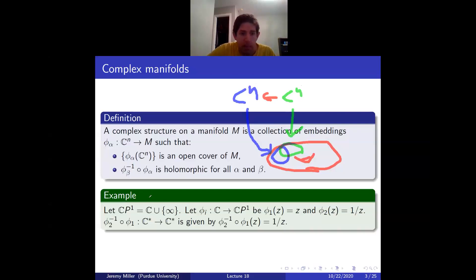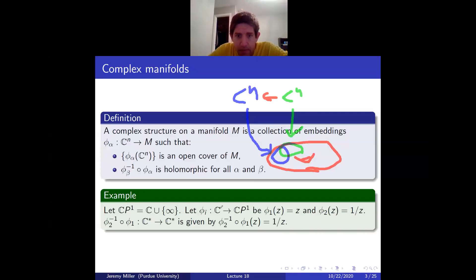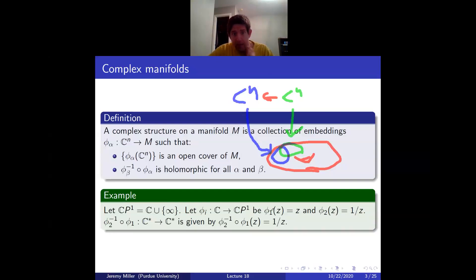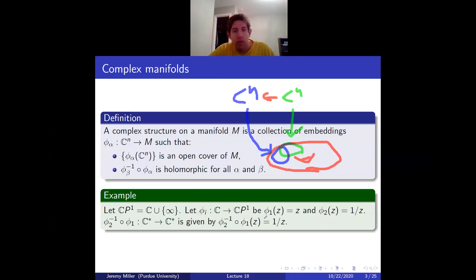A typical example is CP^1, which we think of as C union {∞}. We cover it with two copies of C: one embedded by the identity, the other by z ↦ 1/z, so ∞ maps to 0. They intersect on the nonzero, non-infinity part of CP^1, and the transition map is 1/z, which is holomorphic.